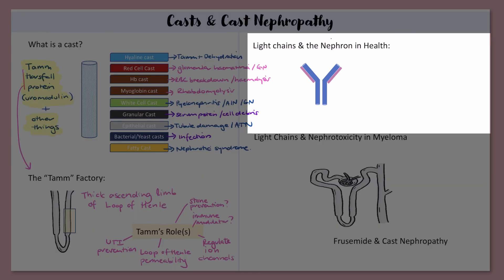Myeloma is cancer of plasma cells. Plasma cells are cells in the bone marrow that make antibodies — they're kind of little antibody factories. And myeloma is cancer of these antibody factories, so you get lots of antibodies being produced and chucked out into the bloodstream. Antibodies have heavy chains and light chains.